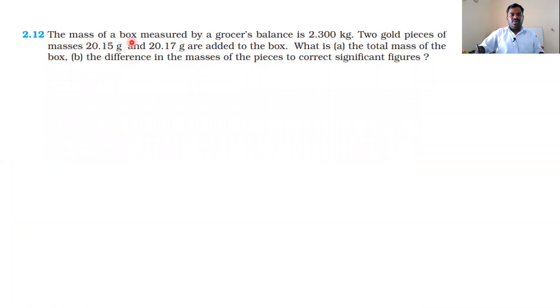Exercise 2.12: The mass of a box measured by a grocer's balance is 2.300 kilograms. Two gold pieces of masses 20.15 grams and 20.17 grams are added to the box. Find: first, the total mass of the box; second, the difference in the masses of the pieces to correct significant figures.